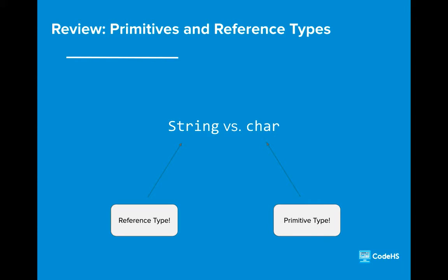In lesson 1.2, we briefly discussed that string and char are different types. Char belongs to the primitive type, as do Boolean, double, and int values, while string is considered a reference type.